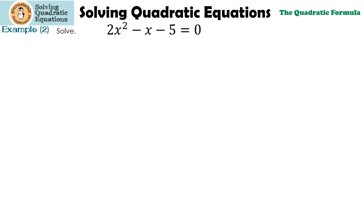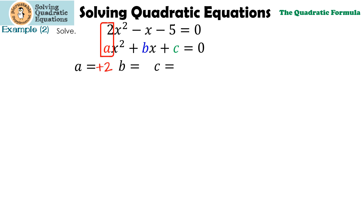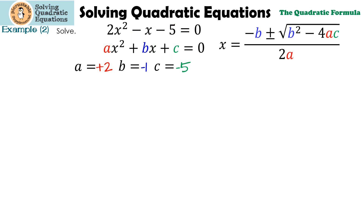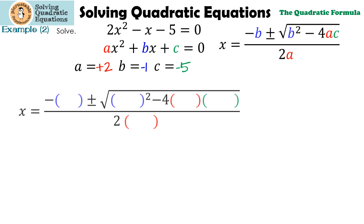Let's look at this one. First, we have to make sure it's in the correct standard form, and it is. a is going to be 2, b is negative 1, and c is negative 5. Let's substitute that into the formula — we put 2 in for a's, negative 1 in for b's, and negative 5 into the c.